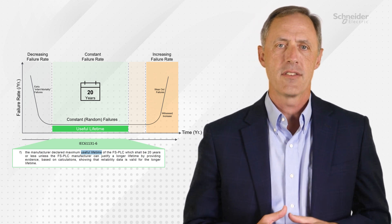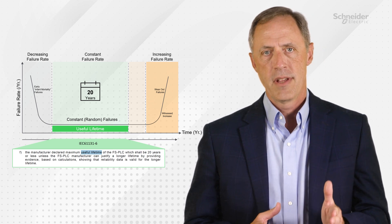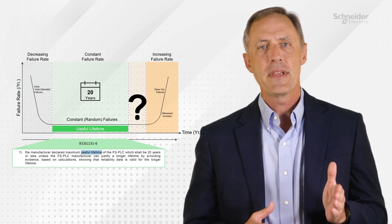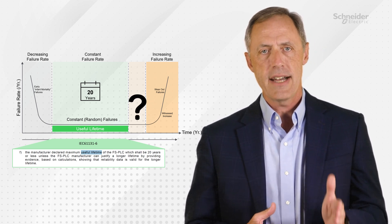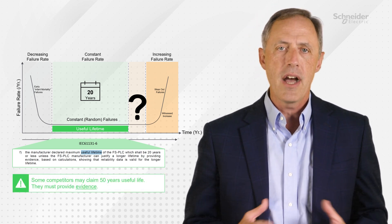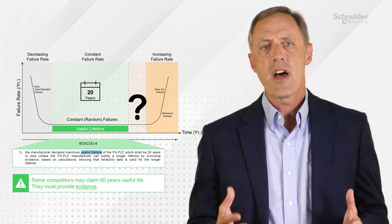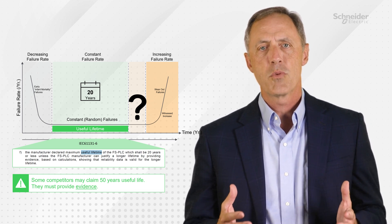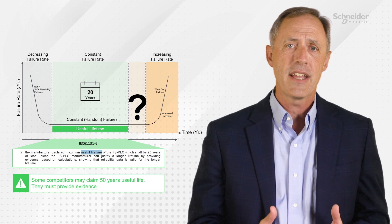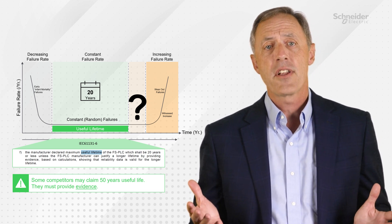The useful life is the relevant range of the system, and beyond this range the failure data cannot be assumed to be constant. Calculating useful life beyond 20 years is nearly impossible, as electronics utilize thousands of individual components of which only the relevant range of failure data is known. As we remember from math class, the accuracy of an equation is only as good as its inputs.